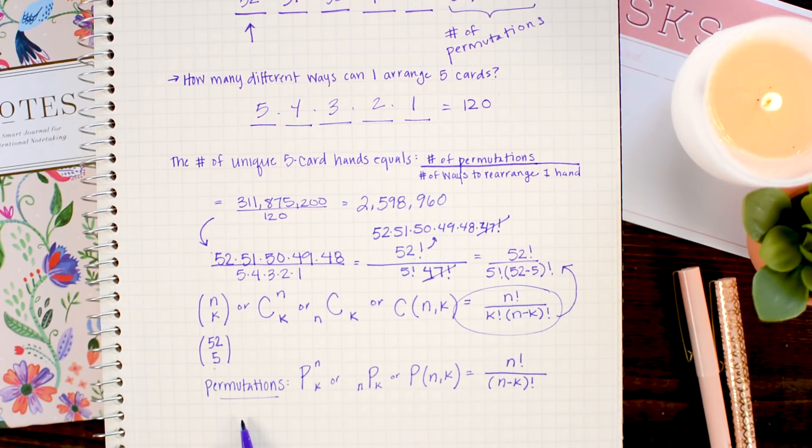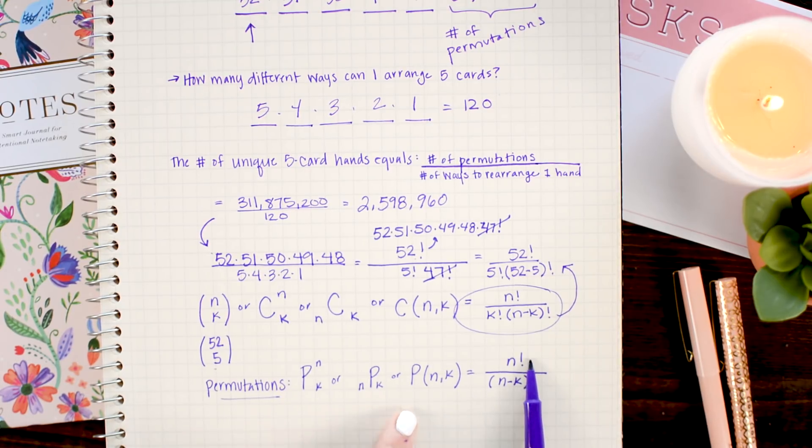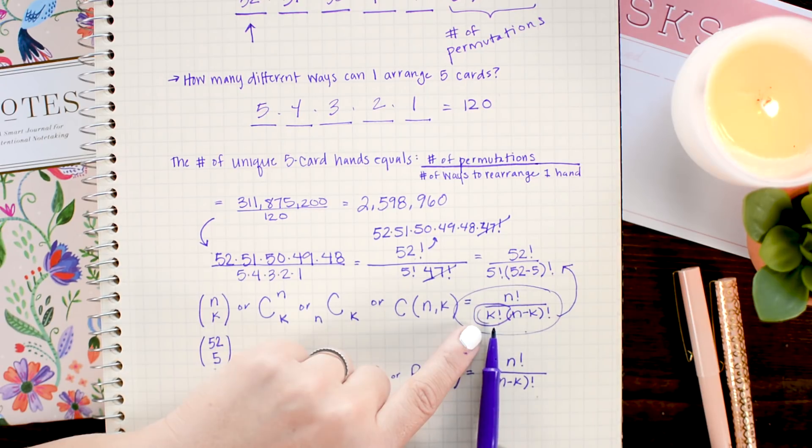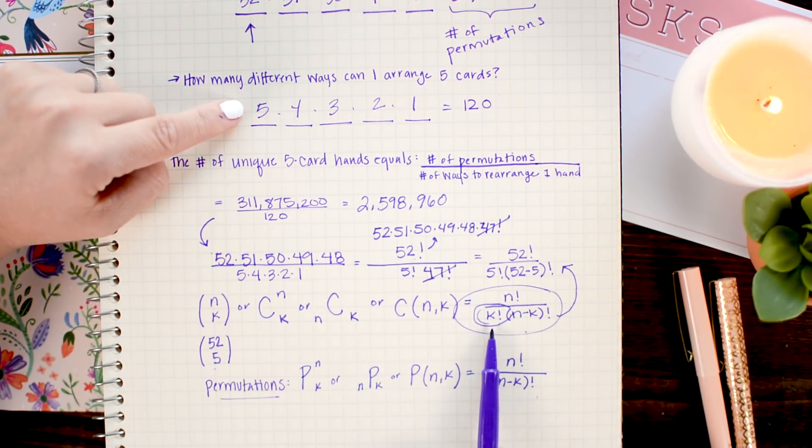So, the permutations formula, which can be written in a variety of notations as well, boils down to N factorial over N minus K factorial. Which is just the same as our combinations formula, without this K factorial. Which removes out all the arrangements we don't care about when we're talking about combinations.